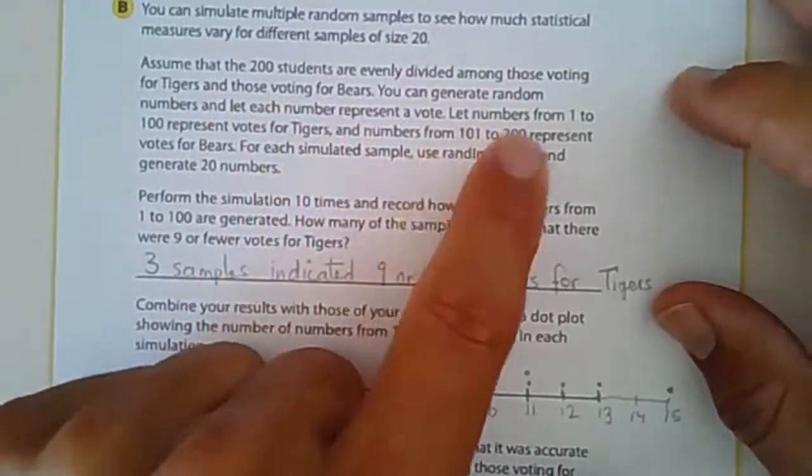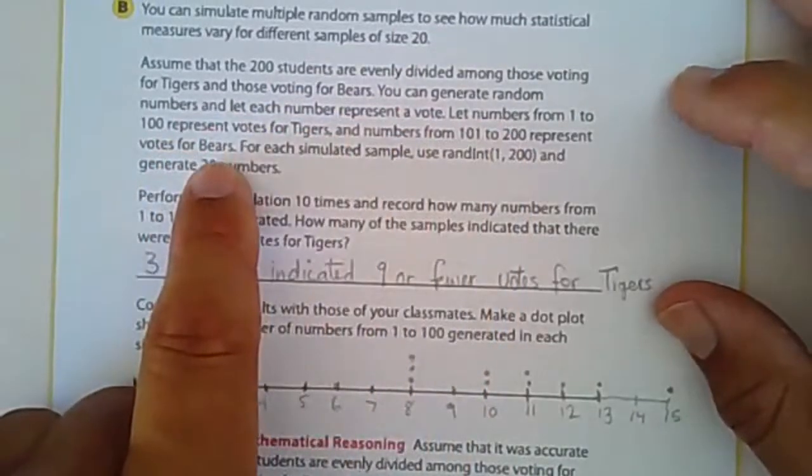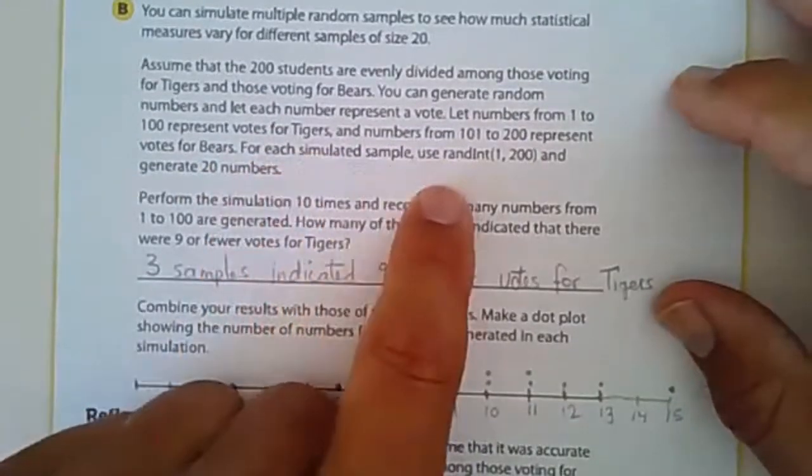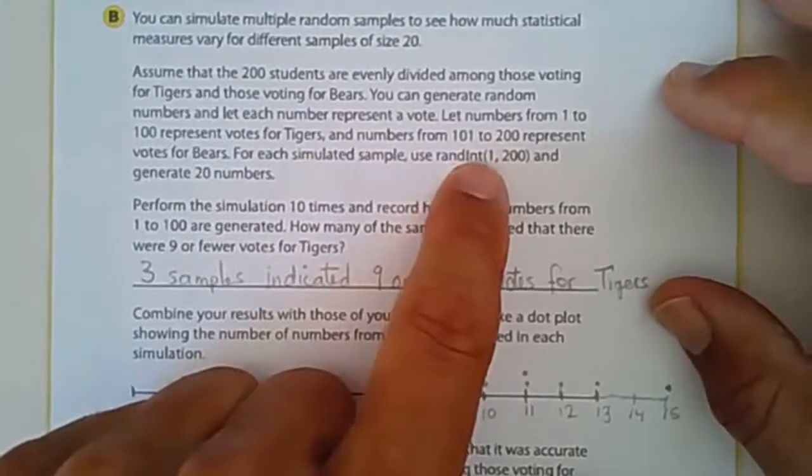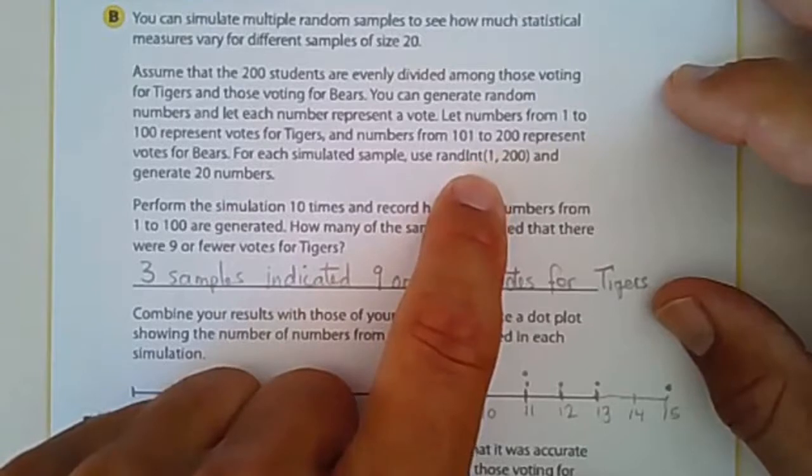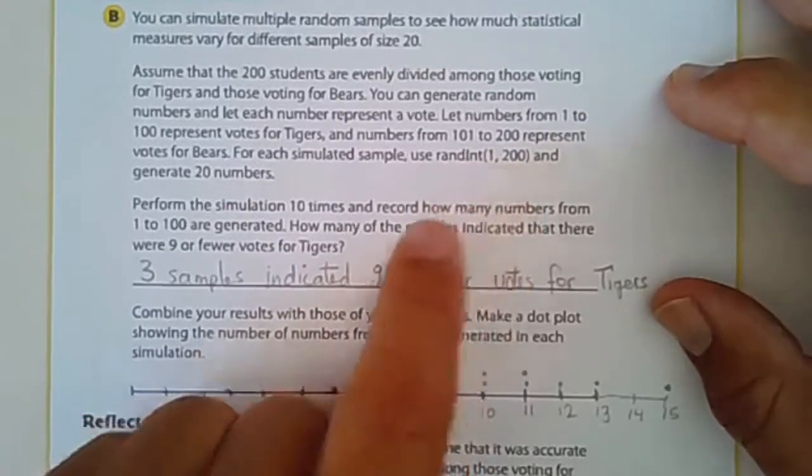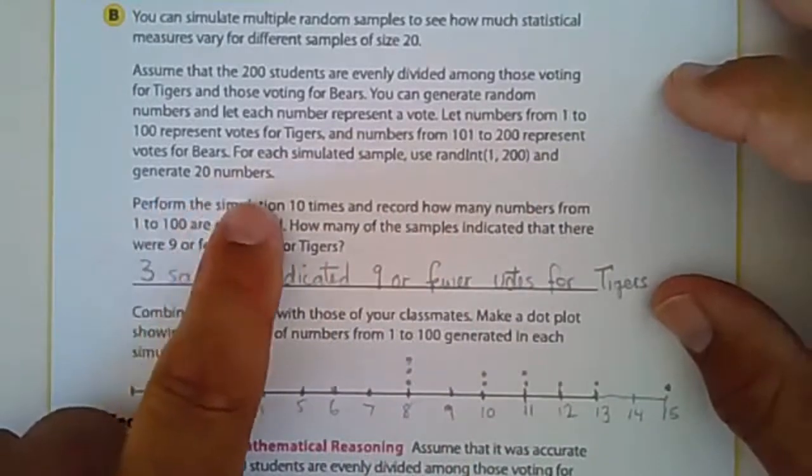Let the numbers from 1 to 100 represent Tigers, the numbers 101 to 200 represent votes for Bears. For each simulated sample, use that same thing that I did earlier in the calculator, rand int random integer from 1 to 200, generate those and generate 20 numbers.